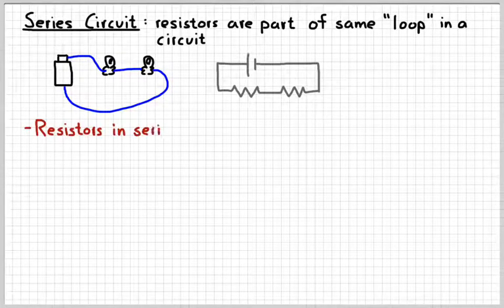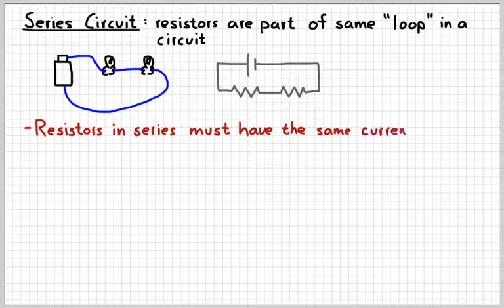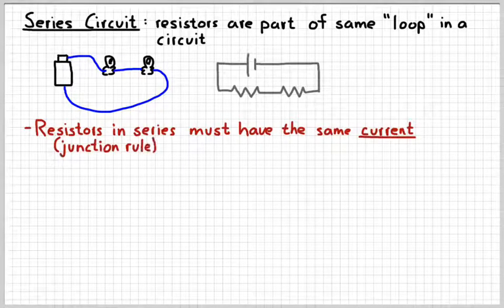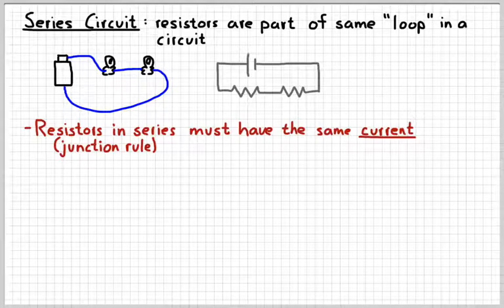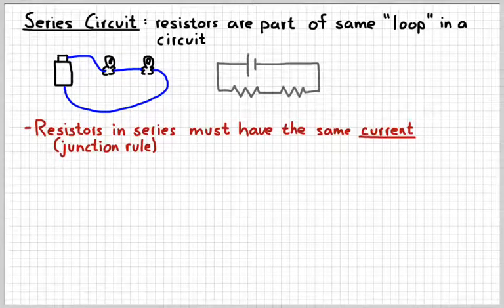When two light bulbs are added in series, they have to have the same current. This is basically a function of Kirchhoff's junction rule. Because the charges that go through the first one don't have any other path to follow, they also have to go through the second one. So when you see resistors in series, remember that they have to have the same current.